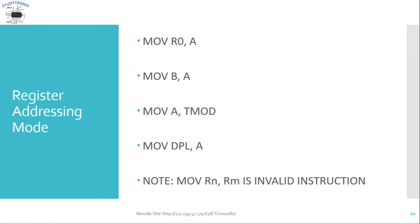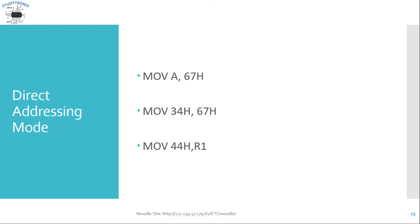Next is direct addressing mode. An example is MOV A, 67H. Here 67H is treated as an address, not data, because there is no hash symbol. This address refers to an internal RAM memory location. Similarly, MOV 34H, 67H has both operands as direct addresses of memory. Another example, MOV 44H, R1, also uses a direct address and is a direct addressing mode instruction.